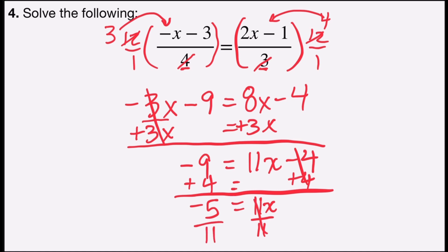11 divided by 11 is 1x. And negative 5 divided by 11 is not a clean division, and so I can express the answer in fraction form. x would equal negative 5 over 11.